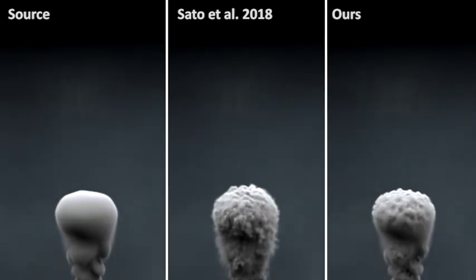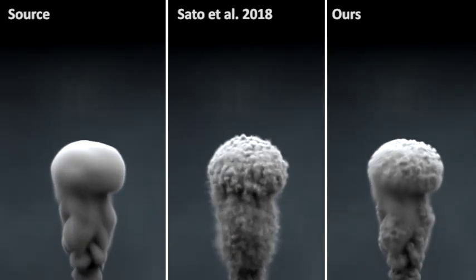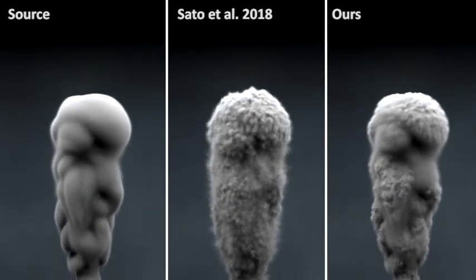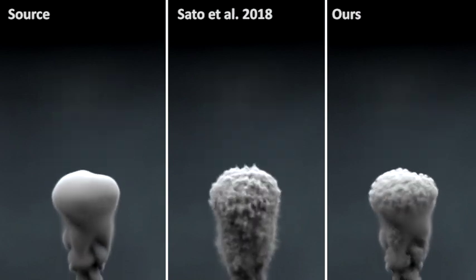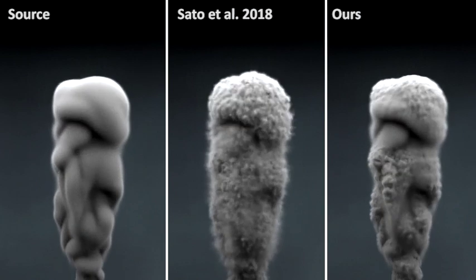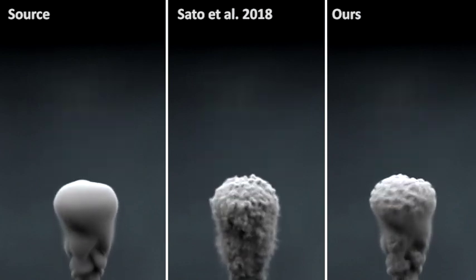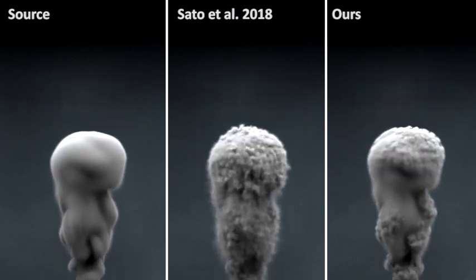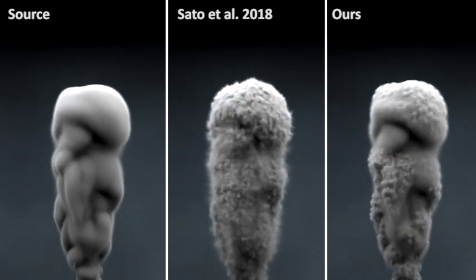Our method is also able to reproduce previous turbulence transfer approaches. A coarse simulation is shown on the left, a previous turbulence transfer method is shown on the middle, and our style transfer approach is shown on the right. We use a single image frame from a high resolution rendering to stylize this smoke simulation.